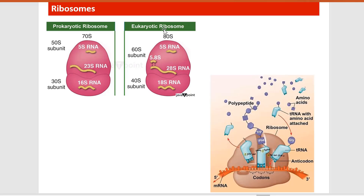The eukaryotic ribosome is an 80S ribosome containing 60S and 40S subunits. If we provide antimicrobials that are specific for protein synthesis, they are most likely not going to react with the eukaryotic ribosomal subunits, giving us good specificity. However, mitochondria — arising from the endosymbiotic theory — also contain a prokaryotic-type 70S ribosome. So when antimicrobials block translation, they also hamper mitochondrial protein synthesis.